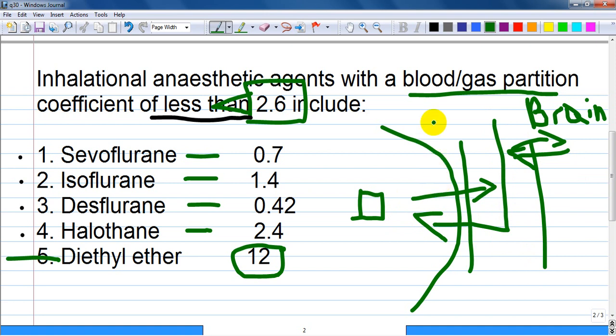So blood gas partition coefficient means that if this value is low, inhalational anesthetic does not like to stay a lot in the blood, and it will go out through the lungs or equilibrate with tissues.